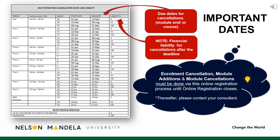Some important dates to note. On screen is a table detailing the financial implications involved in late module cancellation. The first column indicates the period in which the module is offered, the start and end date for module cancellations, and the financial percentage liable for payment in the event of late cancellations. Please note, enrollment, cancellations, and module amendments must be done by you using this online registration process until online registration closes. Thereafter, please contact your administrative consultant for assistance.